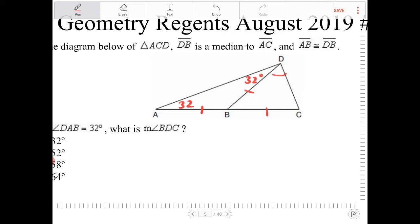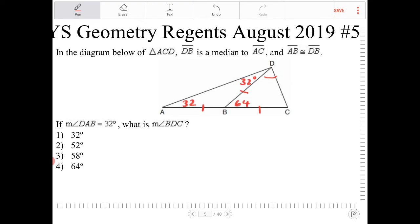Based on the exterior angle theorem, this is going to be 64. And if that's 64, this is also an isosceles triangle—BCD is also an isosceles triangle.